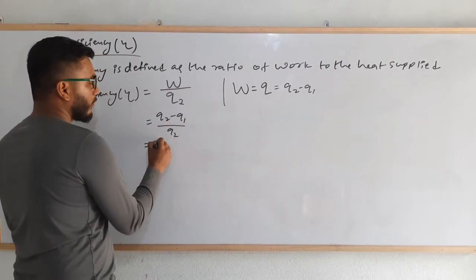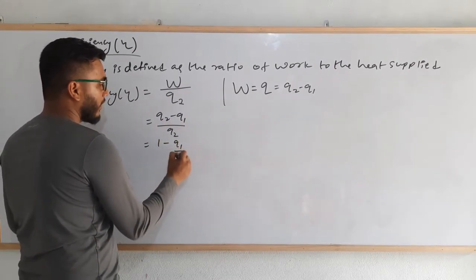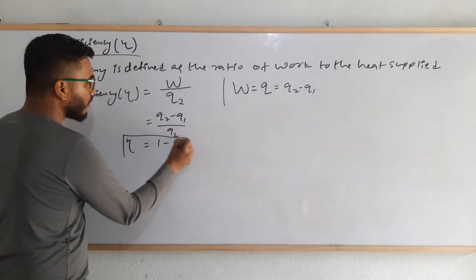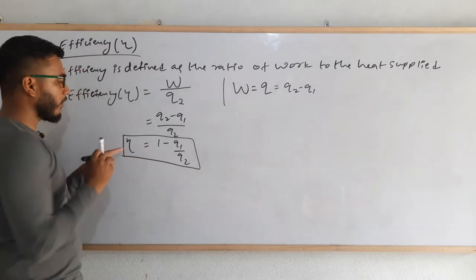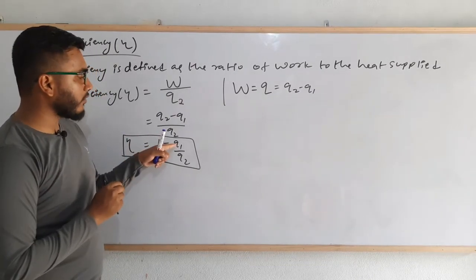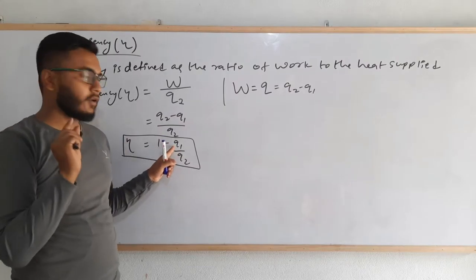In case of W, we can write Q2 minus Q1. If we solve, it will get 1 minus Q1 by Q2. This is the formula of efficiency that we use to find the value of efficiency properly. This formula depends on the heat energy, that is Q1 and Q2.